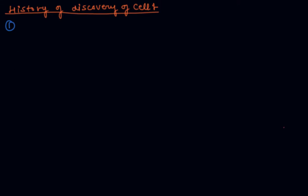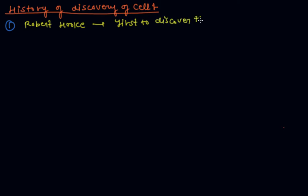Today I discuss the history of discovery of the cell. The scientist Robert Hooke was the first to discover the cell in 1665.